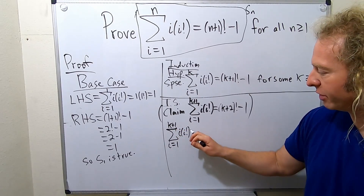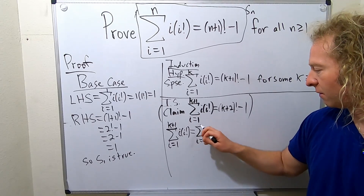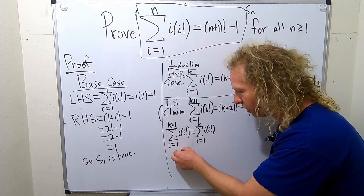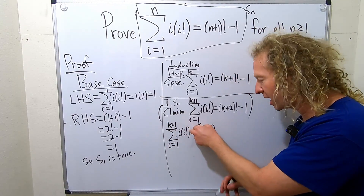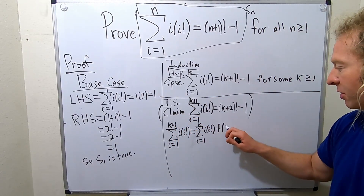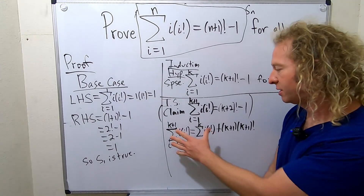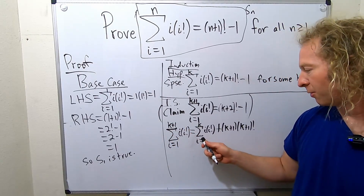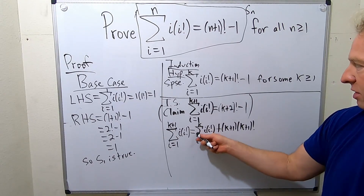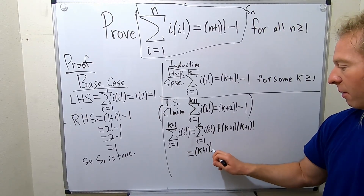So we have the finite sum as i runs from 1 to k plus 1. A typical thing you do with sums is break it up — go from 1 to k, and then add the last piece on. So this is the sum from 1 to k plus the k plus 1 term, which is k plus 1 times k plus 1 factorial. Now we can use our induction hypothesis to replace the sum from 1 to k — that equals k plus 1 factorial minus 1.